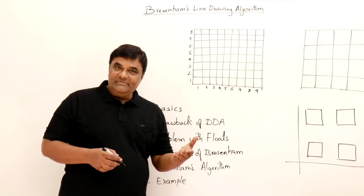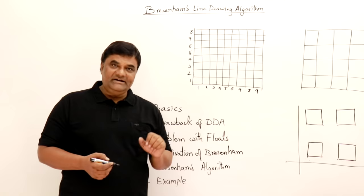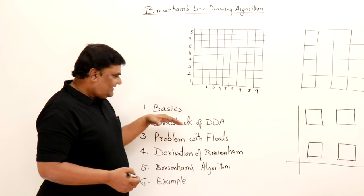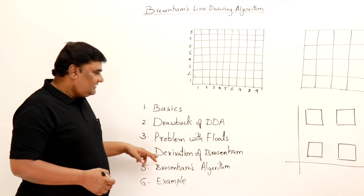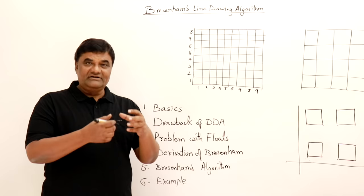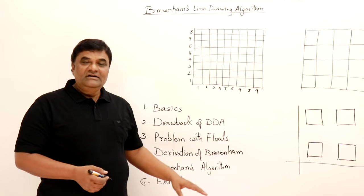Bresenham's algorithm is designed to avoid the drawbacks of DDA. The problem with DDA is the use of float values. We will cover the derivation of Bresenham's algorithm, which involves a lot of mathematics, and then we will see the algorithm and solve one problem.